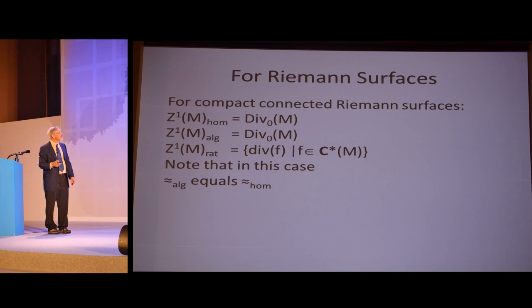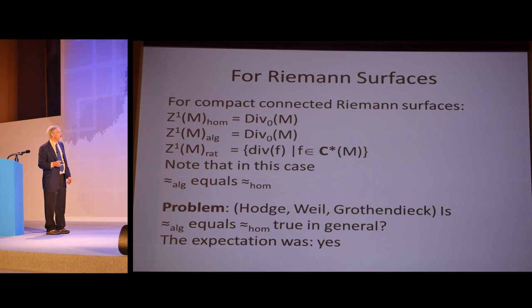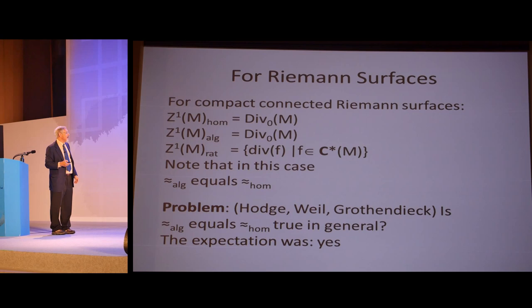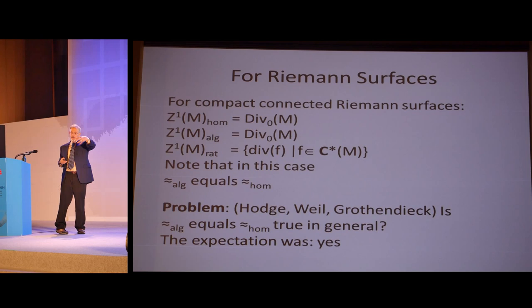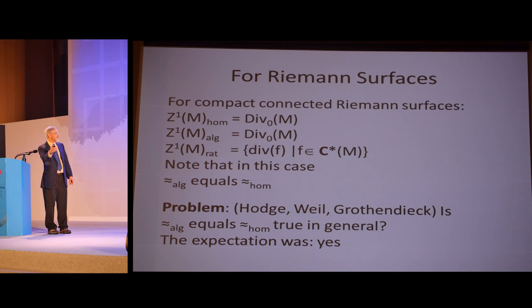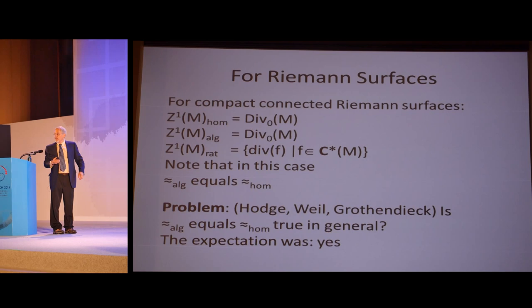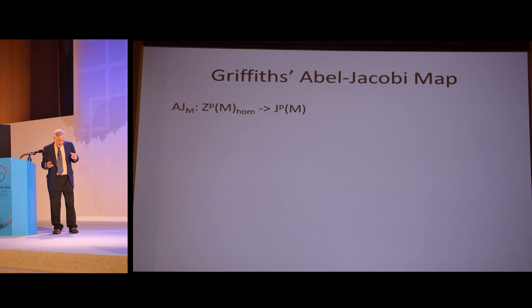It's progressively more restrictive. It's harder to be algebraically equivalent to zero than homologically, it's harder to be rationally than algebraically. For Riemann surfaces, the cycles that are homologous to zero are just the divisors of degree zero, which is why I told you about in the beginning. But likewise, because you can just use M as the curve in the definition of algebraic equivalence, it's also the same for algebraic equivalence. Rational equivalence turns out to be being a divisor for meromorphic function. So everything we saw before is just an instance of these equivalence relations. Note that in this case, algebraic equivalence and homological equivalence are the same. But a variety of people, Hodge and Weil and Grothendieck, probably Lefschetz, wondered if these two things were the same in general. That is, if you could fill in by some geometric, if something was a geometric boundary, could you fill in by this very special type of boundary? The expectation was yes, because nobody could think of any possible way of telling apart those two equivalences.